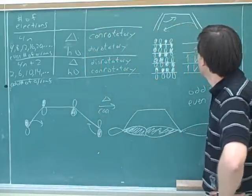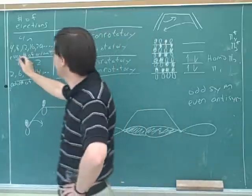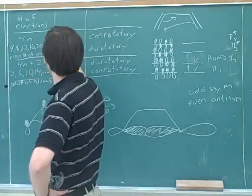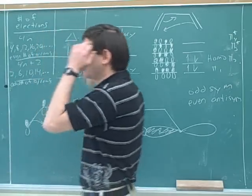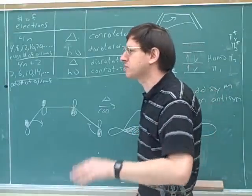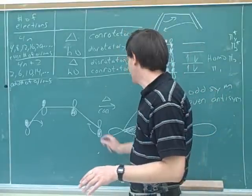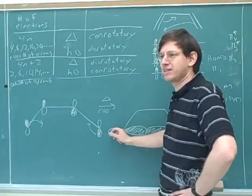So what did we end up predicting here, conrotatory or disrotatory? Con. Con, to get the bonding interaction. Now let's see what our table would have predicted. So where would we be in our table? Well, we have an even number of arrows. And we're doing a thermal reaction. So the table would have predicted conrotatory too. But you mentioned that your instructor doesn't like you to use the table. They want you to be able to explain it using the molecular orbital theory. I think this is what you meant by the signs. I keep saying shaded and unshaded.